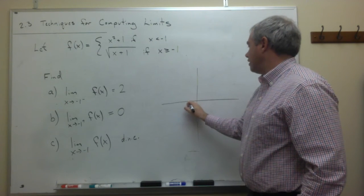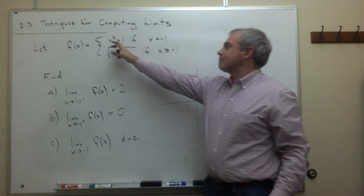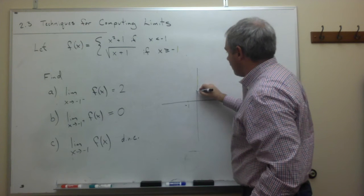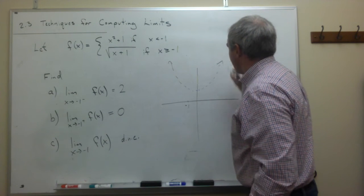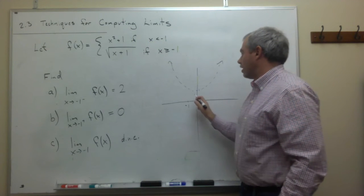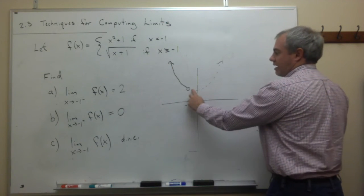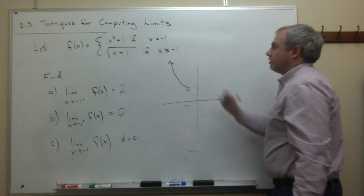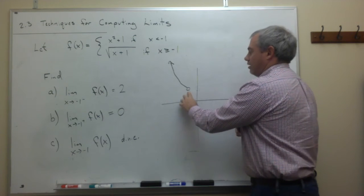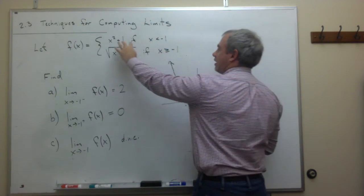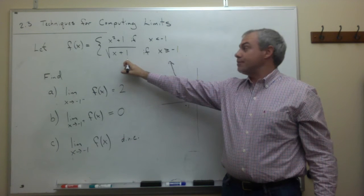The interesting point here is minus 1. The function x squared plus 1 is a parabola shifted up 1 unit. But this piece only applies when x is less than minus 1, so the parabola only exists to the left of minus 1. I put an open circle at minus 1 to indicate the function doesn't include that point on this piece.